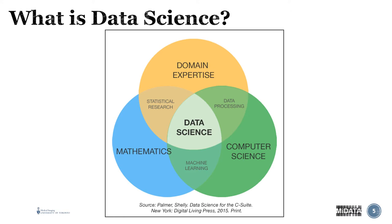When we talk about data science, there are three core concepts that make up data science, and you need all three in order for it to be data science. There's the math, because we're dealing with random variables, dealing with numeric variables that measure something or count something for frequency. There's the computer science, because it's through computers that we are collecting, verifying, validating, and manipulating this data. But lastly, and not least, is the domain expertise — I'll say it's probably more important than the math and the computer science.